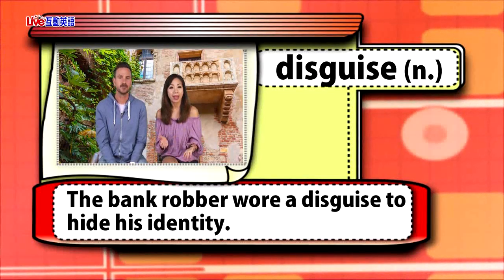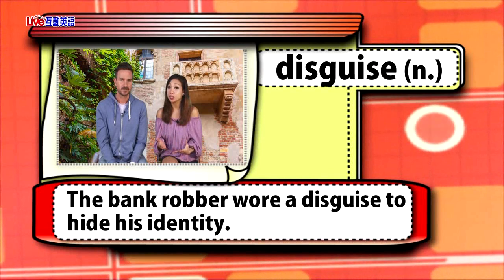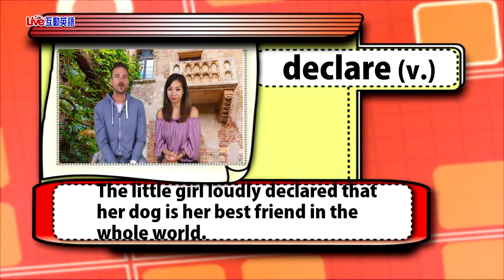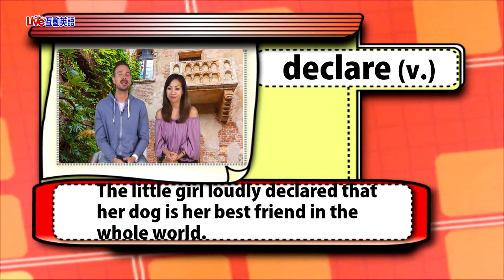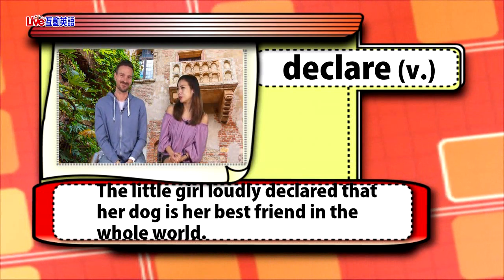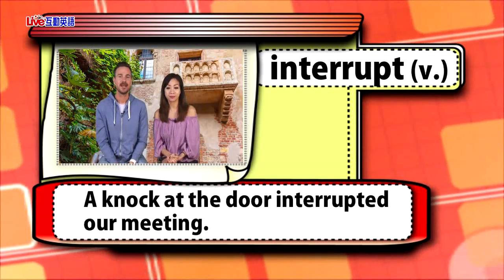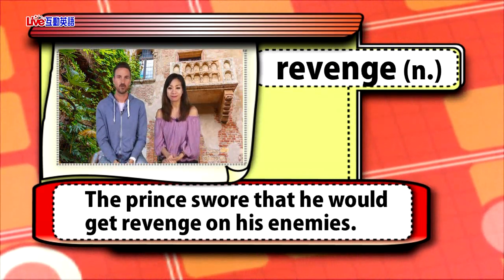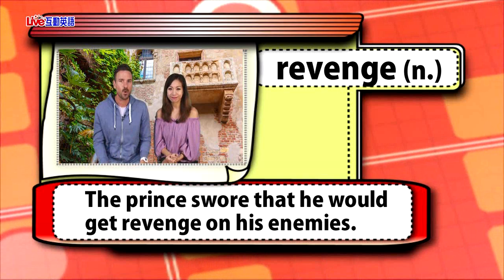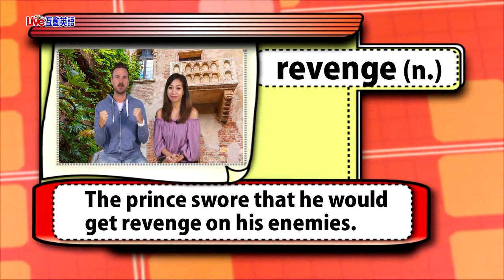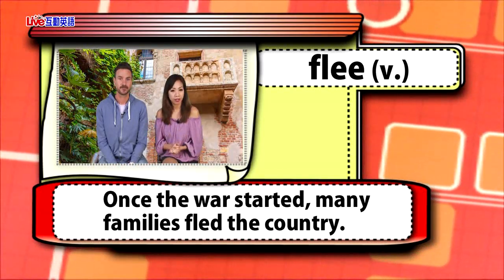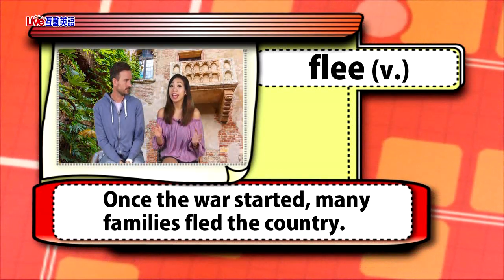The vocabulary words are: disguise — the bank robber wore a disguise to hide his identity. Declare — the little girl loudly declared that her dog is her best friend in the whole world. Interrupt — a knock at the door interrupted our meeting. Revenge — the prince swore that he would get revenge on his enemies. Flee — once the war started, many families fled the country.